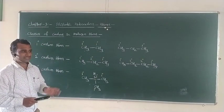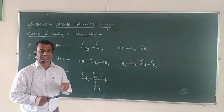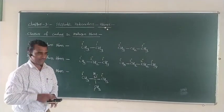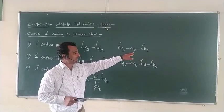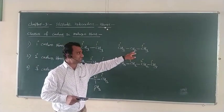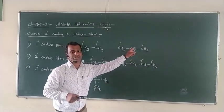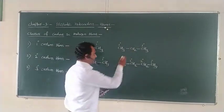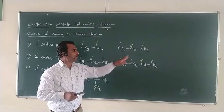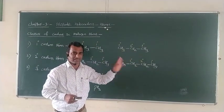The second class is the secondary hydrogen atom. The hydrogen atoms which are attached to a secondary carbon atom are called secondary hydrogen atoms. For example, in propane, the centrally situated carbon (CH2) is attached to two other carbon atoms, making it a secondary carbon. The two hydrogens attached to this secondary carbon are called secondary hydrogen atoms.